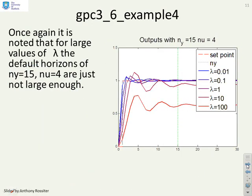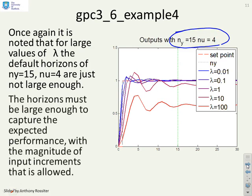What about example 4? Now here I've taken ny equals 15, nu equals 4 and you can see that with low values of weighting some of these examples up here we're not too bad, it's doing a reasonable job. But again as you increase the lambda and slow down the input activity what do you find? Your predictions are getting worse and worse and worse. And so clearly an output horizon of 15 is not good enough in this case and you might also be making an argument an input horizon of 4 is not good enough.